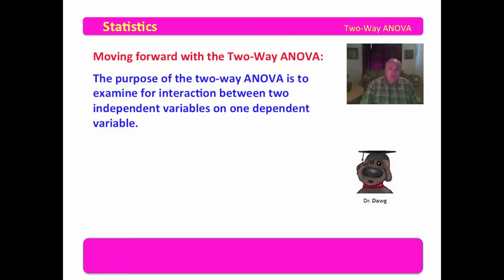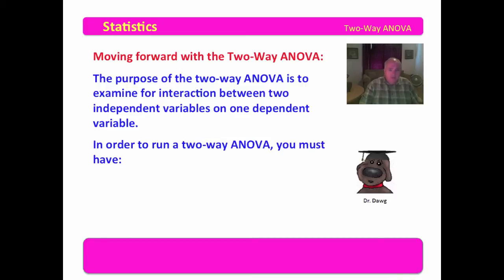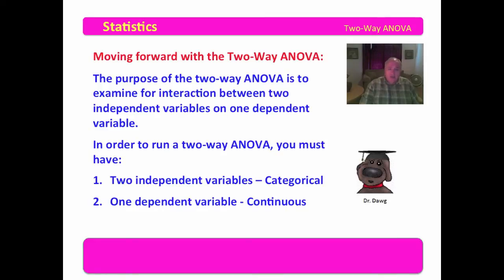Moving forward with the two-way ANOVA, the purpose of the two-way ANOVA is to examine for interactions between two independent variables and one dependent variable. In order to run a two-way ANOVA, you must have two independent variables — these should be categorical — and you must have one dependent variable, which is continuous.